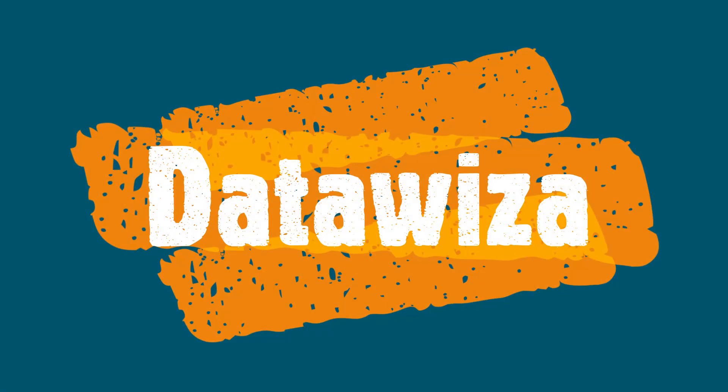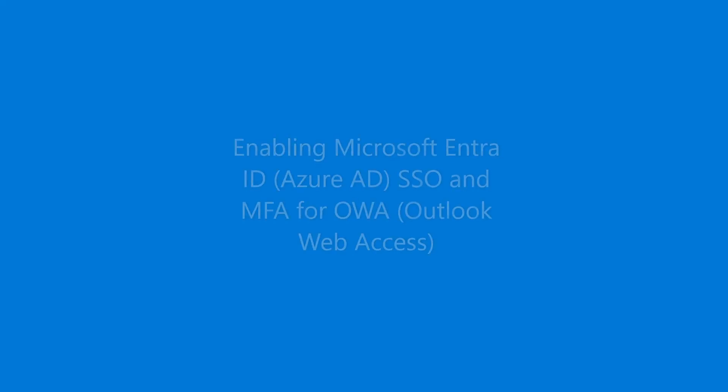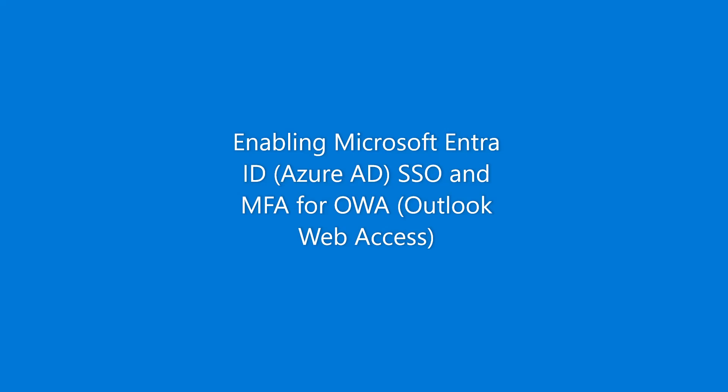Hi everyone, today we will see how to enable Microsoft Entra ID, formerly known as Azure AD, single sign-on and multi-factor authentication for OWA, formerly known as Outlook Web Access. Let's get started.